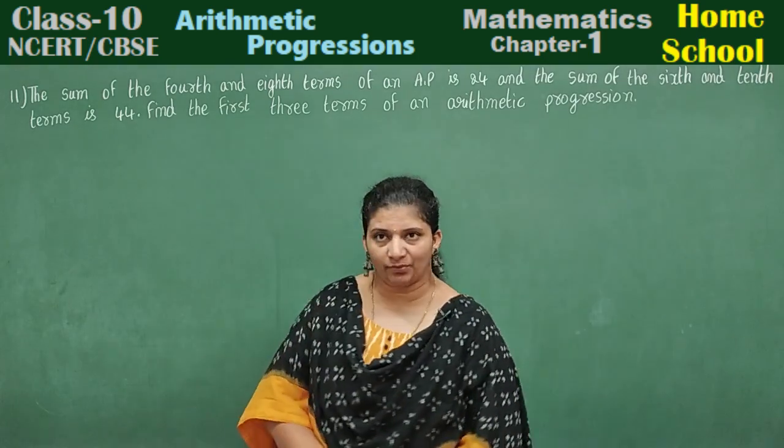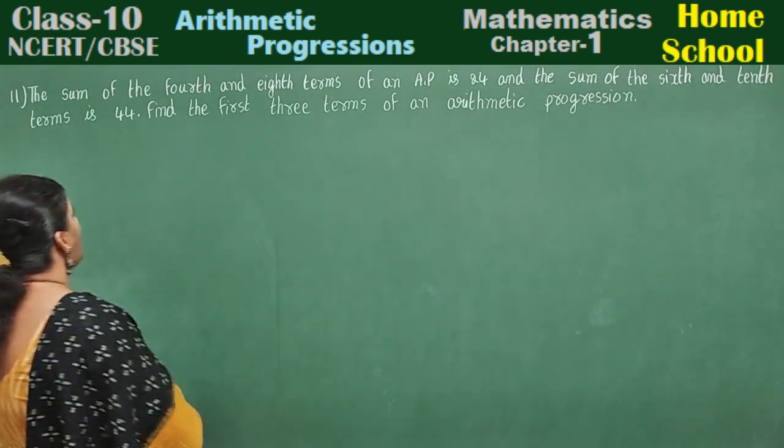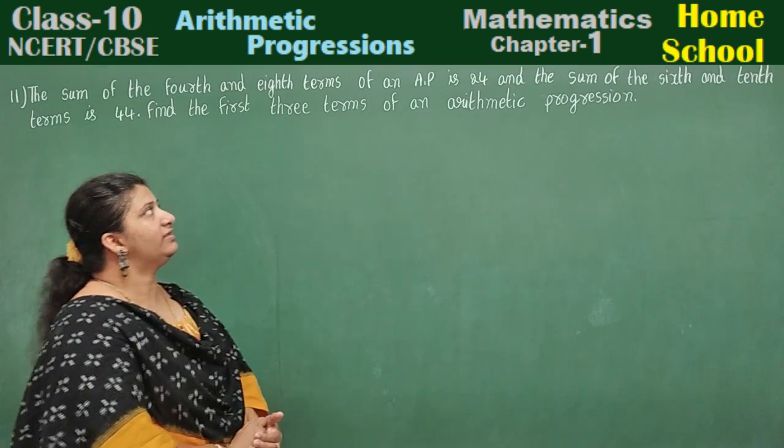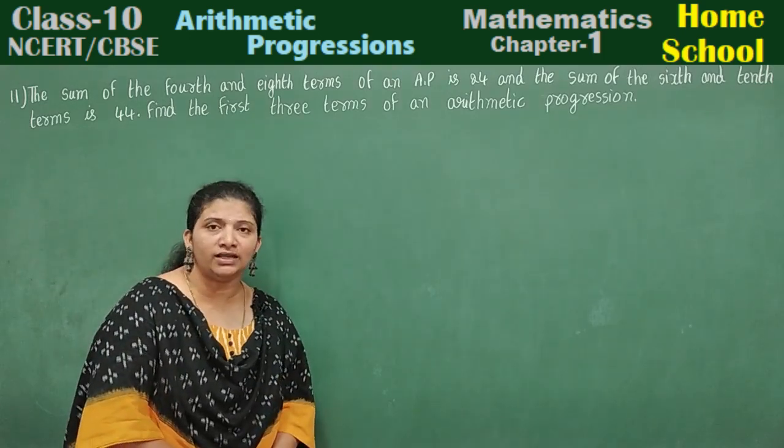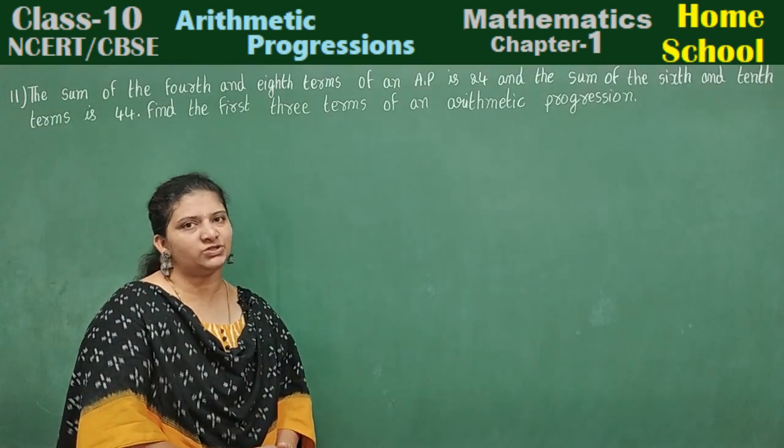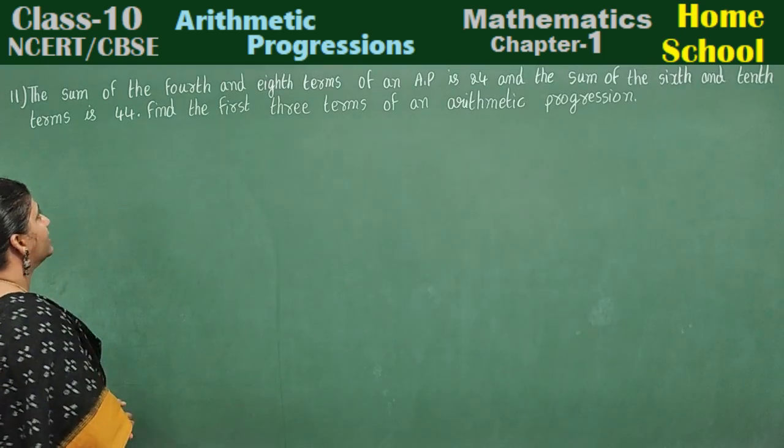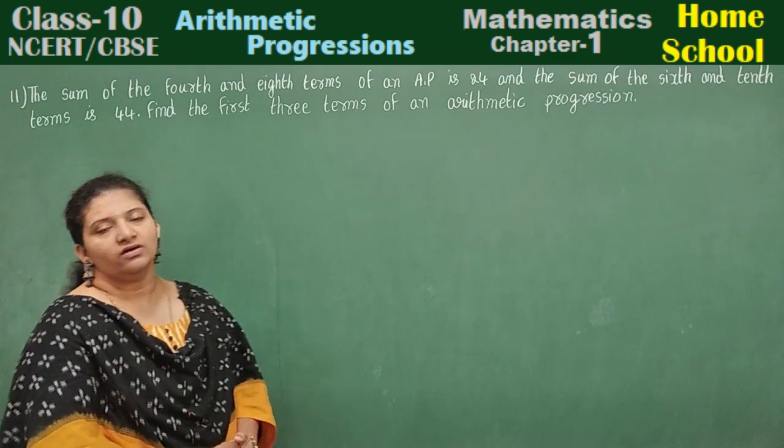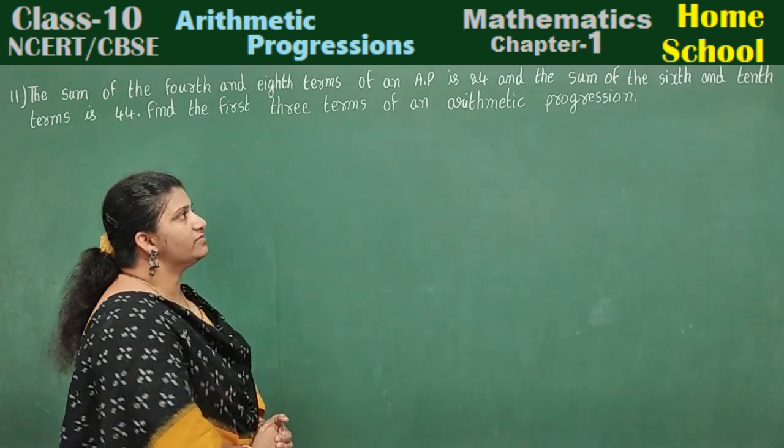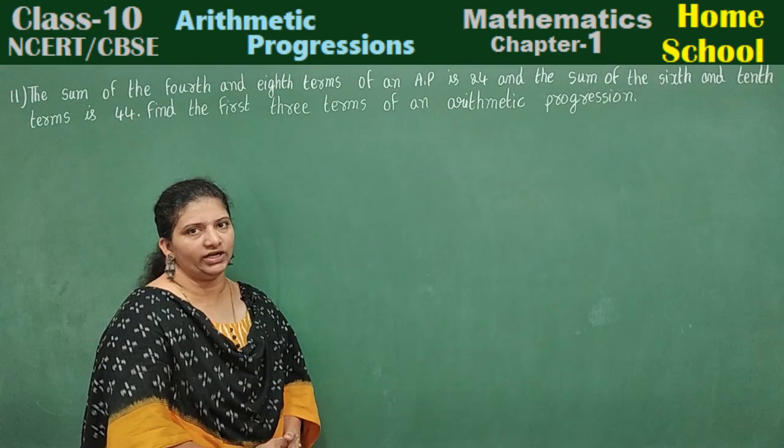Problem number 11: The sum of the fourth and eighth terms of an arithmetic progression is 24, and the sum of the sixth and tenth terms is 44. Find the first three terms of an arithmetic progression.